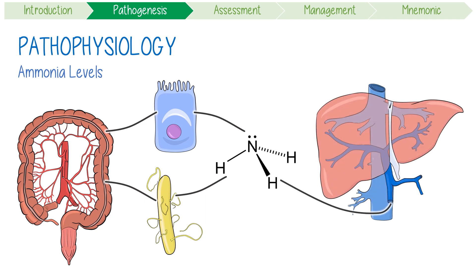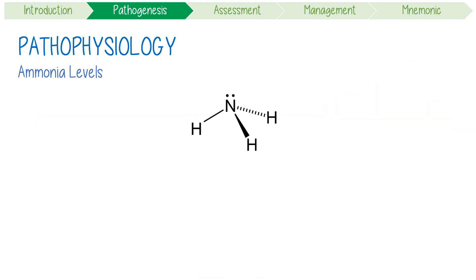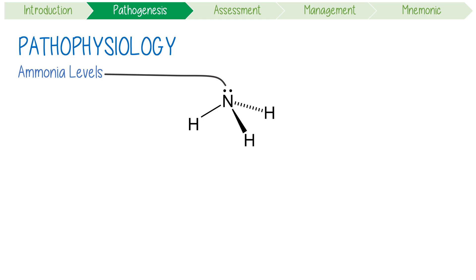Usually this ammonia would get converted into glutamine, but if you have hepatic insufficiency, this process gets derailed and blood ammonia levels rise. This neurotoxic substance interferes with brain function in a couple of ways.